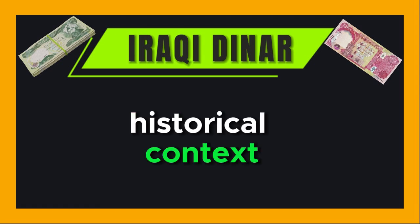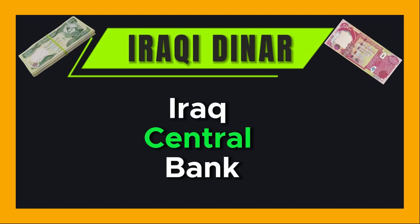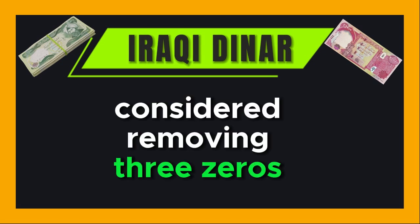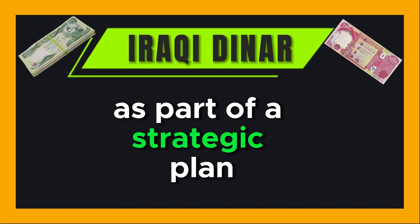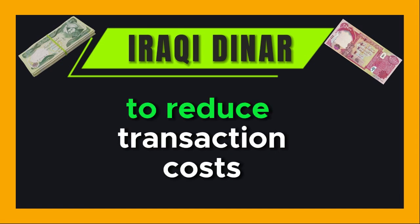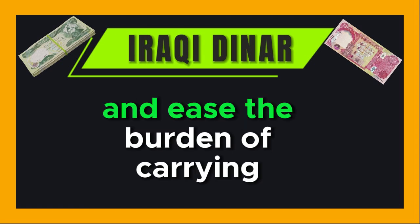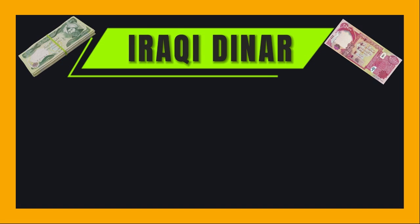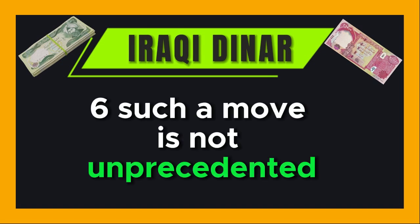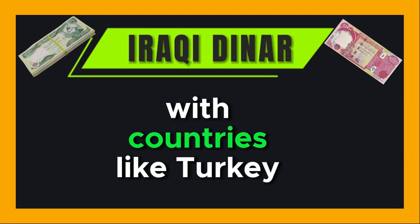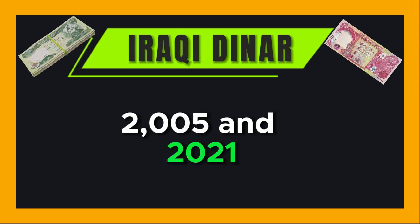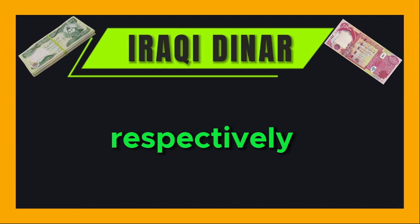Iraq's central bank has previously considered removing three zeros from the dinar as part of a strategic plan to reduce transaction costs and ease the burden of carrying large amounts of cash. Such a move is not unprecedented, with countries like Turkey and Venezuela implementing similar measures in 2005 and 2021, respectively.